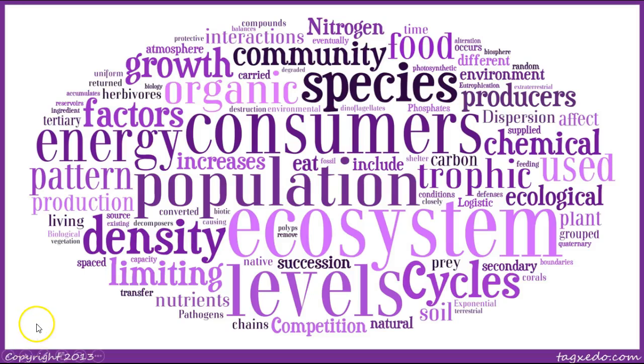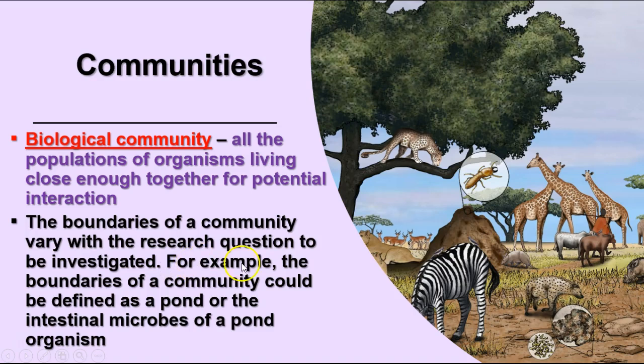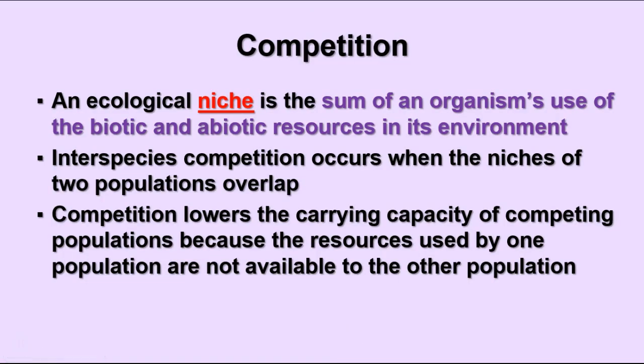In ecosystems, populations don't live by themselves — they interact with other populations, and that's called a community. A community is all of the populations of organisms living close enough together for interaction in a particular environment. The boundaries of the community depend on what you're studying: it could be your backyard, a pond, or even the microbes living in the intestines of a fish in that pond.